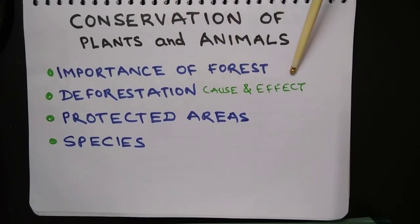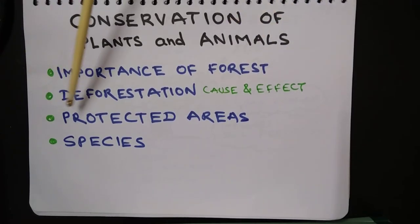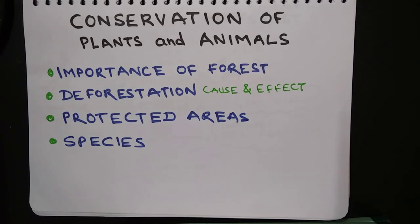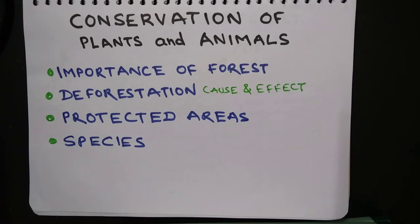To recapitulate: we covered the importance of forests, the causes and effects of deforestation, protected areas and their types including national parks, sanctuaries, and biosphere reserves, and we covered species including endemic species, endangered species, and extinct species. At the end of the lesson we discussed the Red Data Book. That's all for this lesson — thank you.